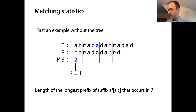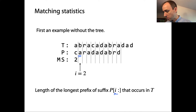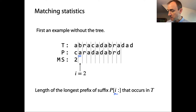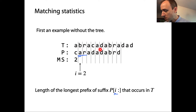That was step i equals one. Now we proceed to i equals two. We start with the 'a' which is the first prefix of the suffix starting at offset i=2. Does 'a' occur in T? Yes, 'a' actually occurs several places in T, so it's definitely going to be length at least one. Does 'ar' occur in T? No, it doesn't — there's a bunch of a's, but none of them have r's after them. So the length one prefix occurs, but the length two prefix doesn't.